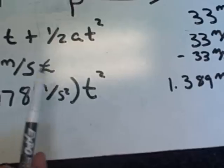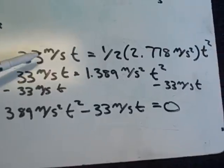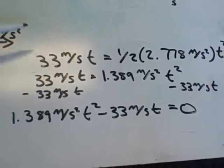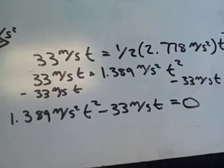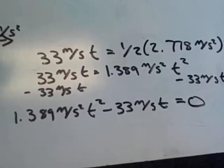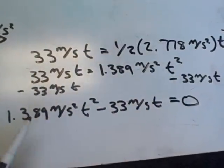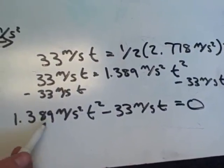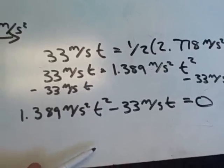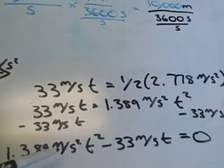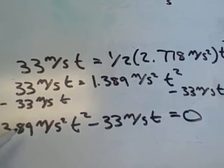In order to solve for T, you set these two equations equal to each other. So you have 33.33 meters per second times T equals one-half times 2.778 meters per second squared times T squared. To solve for T, you subtract 33.33 meters per second times T from both sides, leaving you with 1.389 meters per second squared times T squared minus 33.33 meters per second times T equals zero. You can then use the quadratic formula to find T.